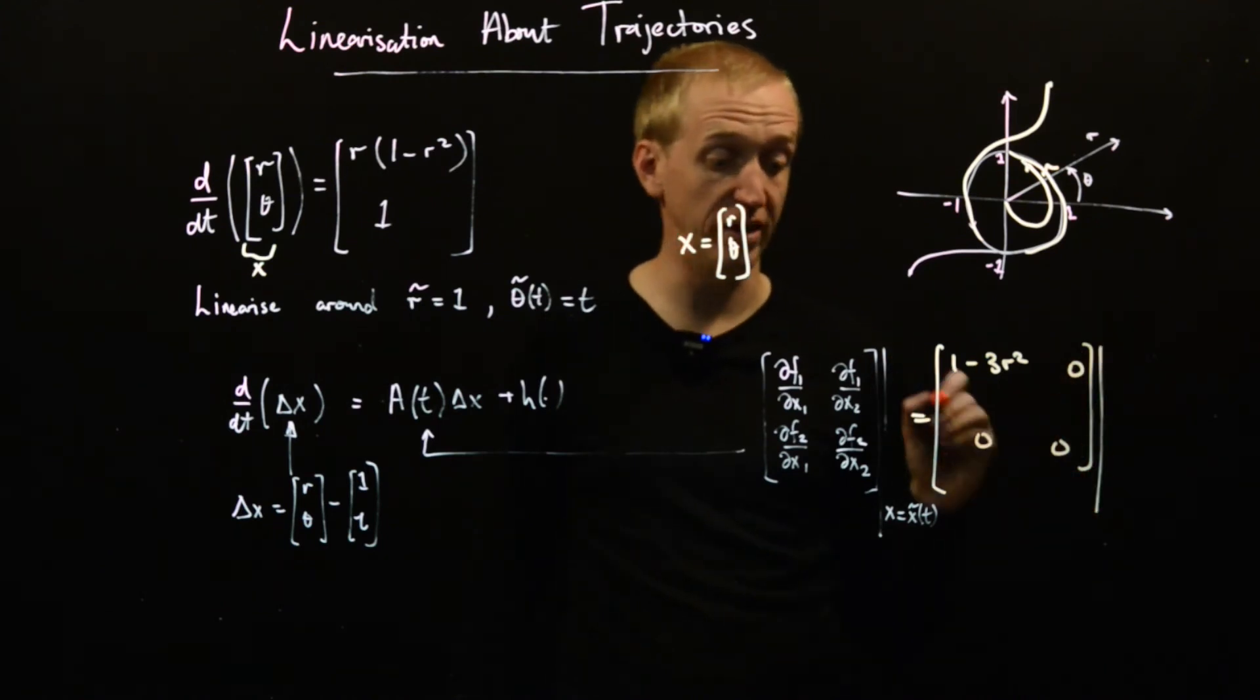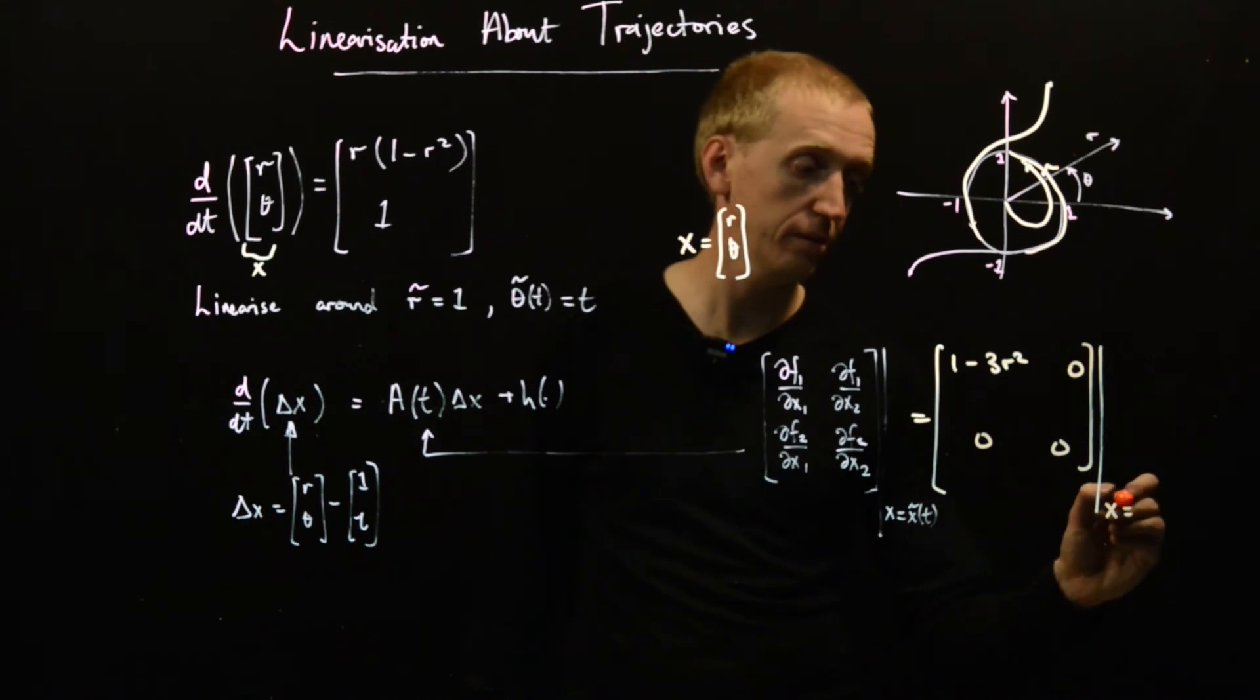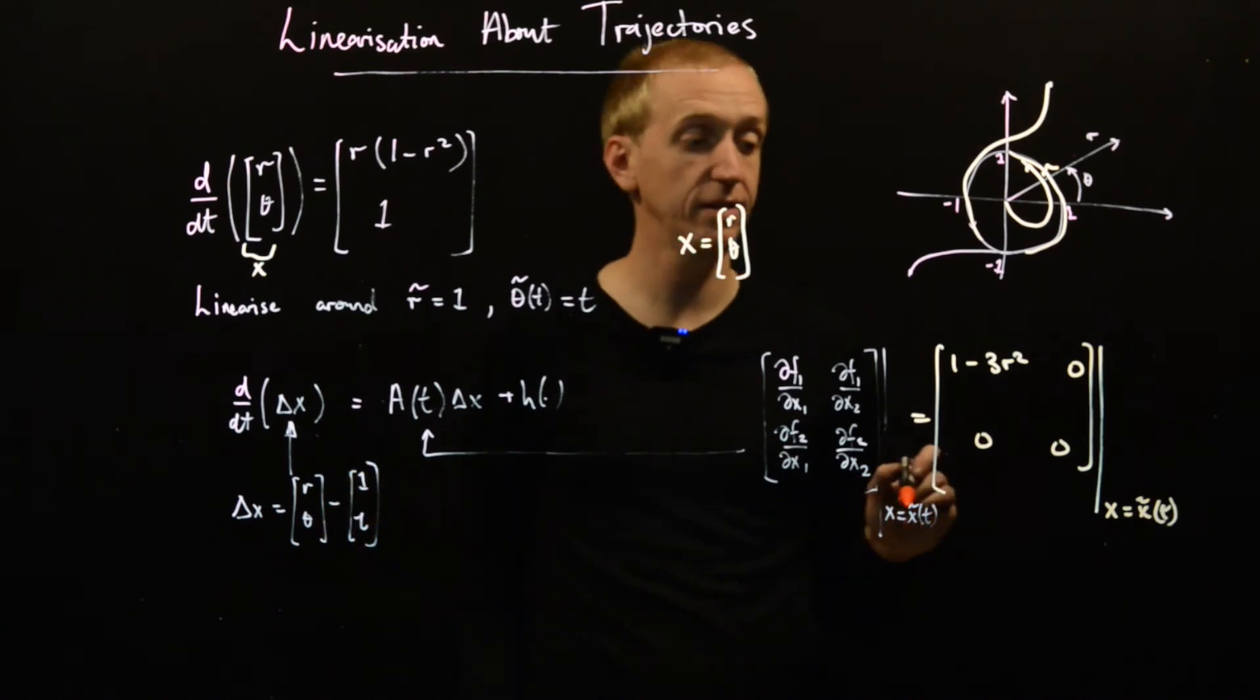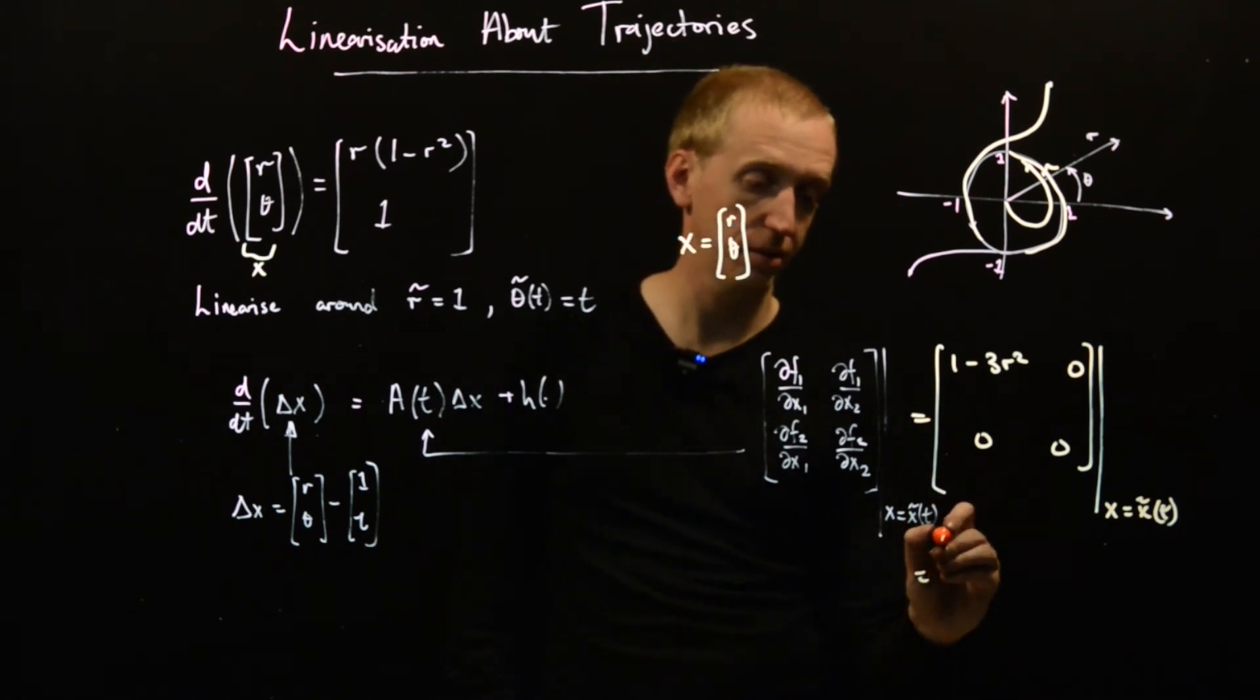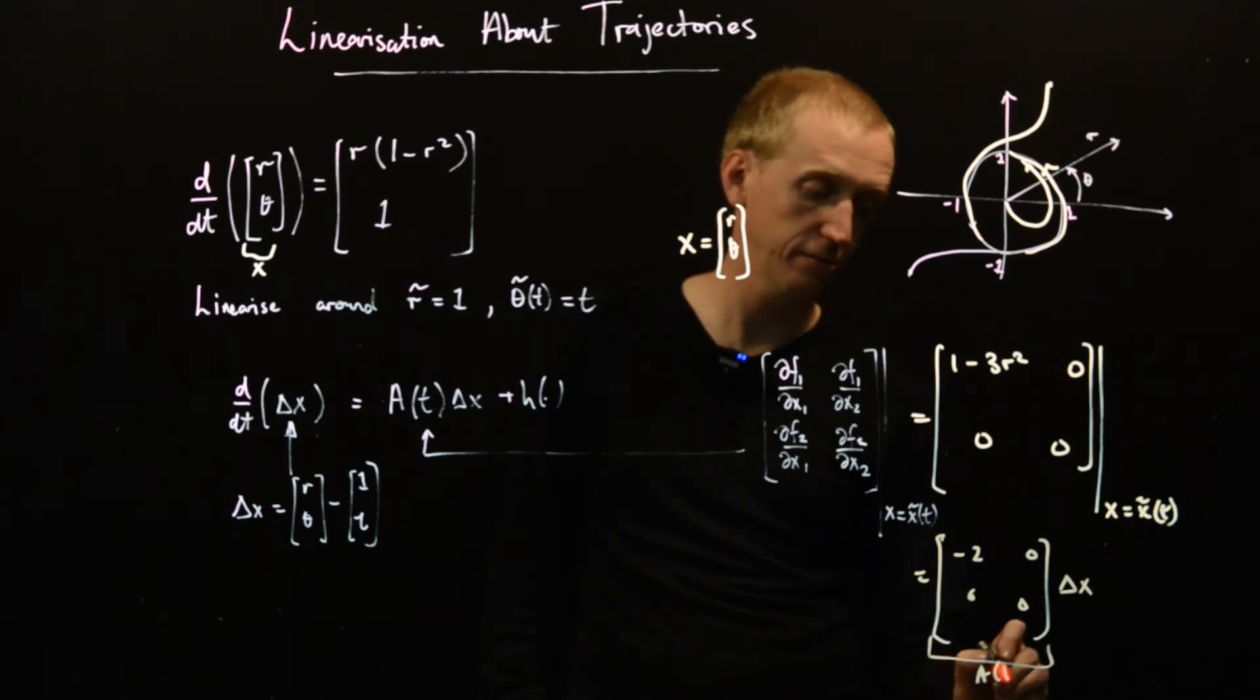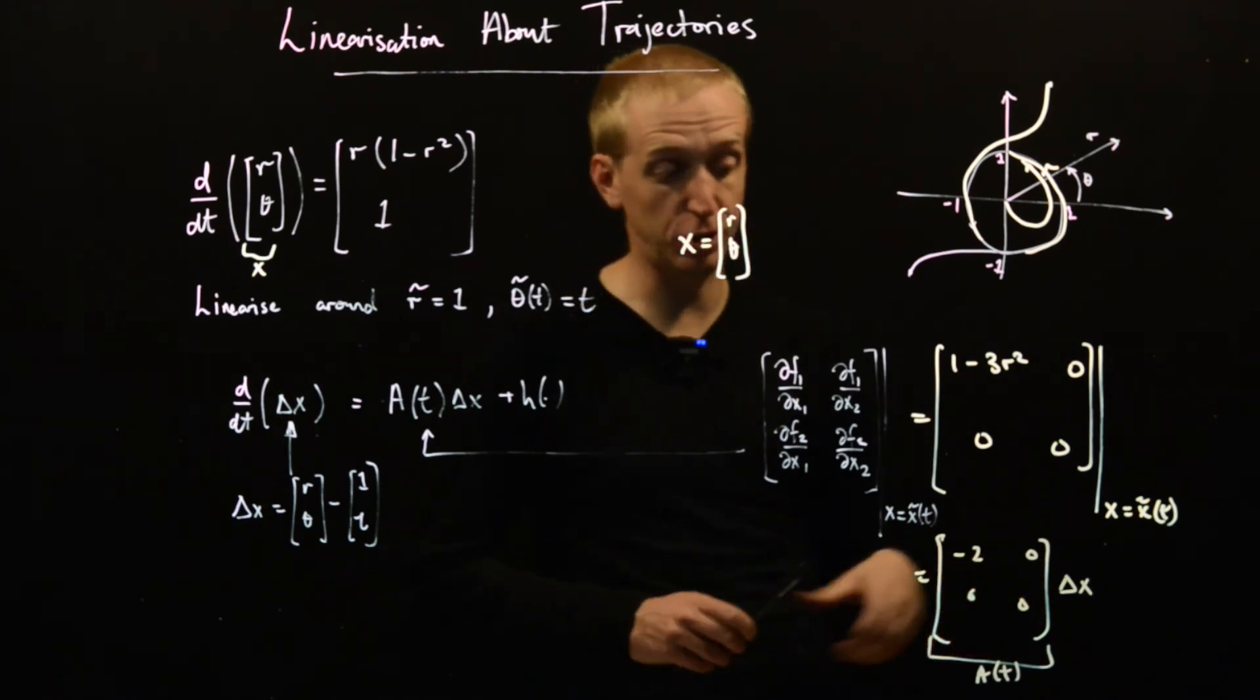Then we need to evaluate it along our trajectory, theta tilde of t. Theta tilde is just [1, t]. So along our trajectory, r equals 1. We end up with 1 minus 2, so minus 2, zero, zero, zero. This thing here, this is A(t). So this is our linearization around this trajectory. And actually, in this case, it turns out that it's not time dependent, so we can start to maybe use our tools for analyzing stability.